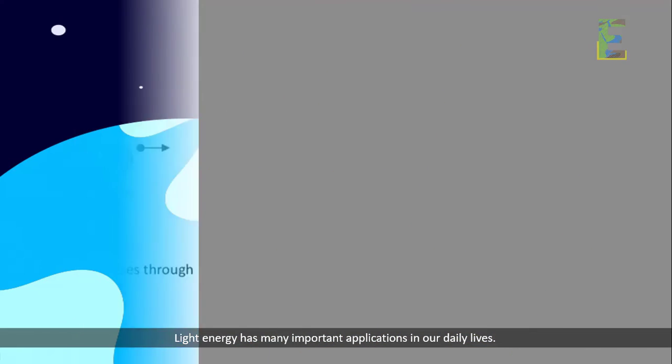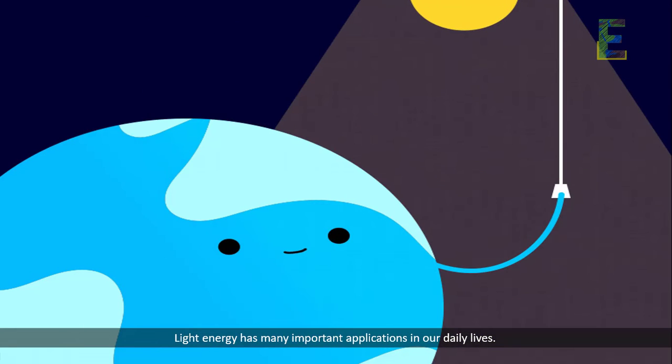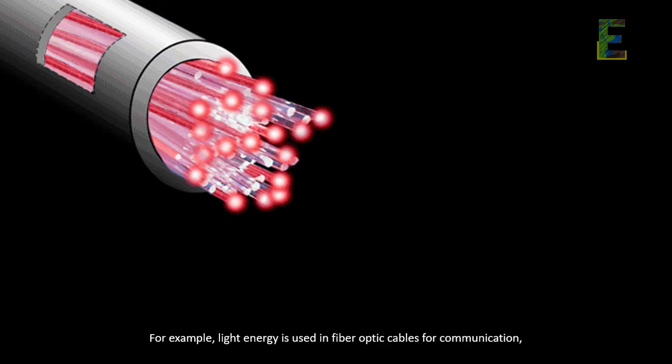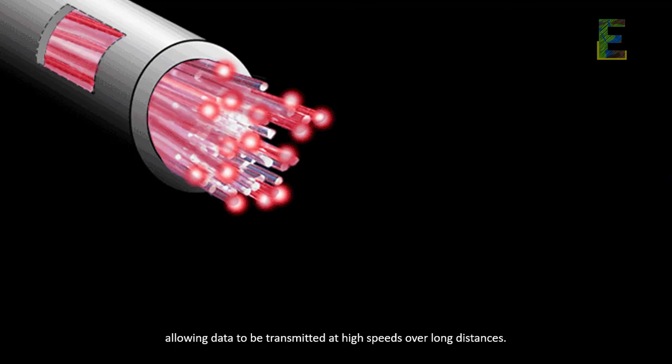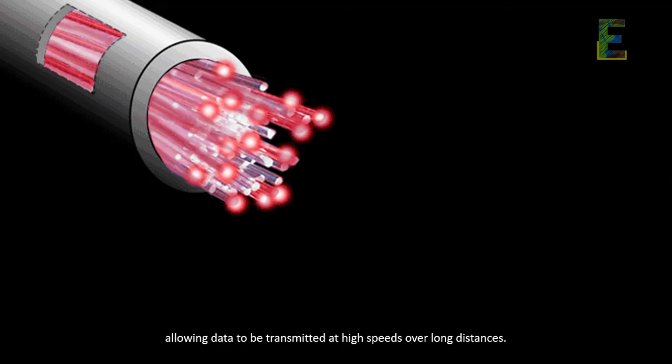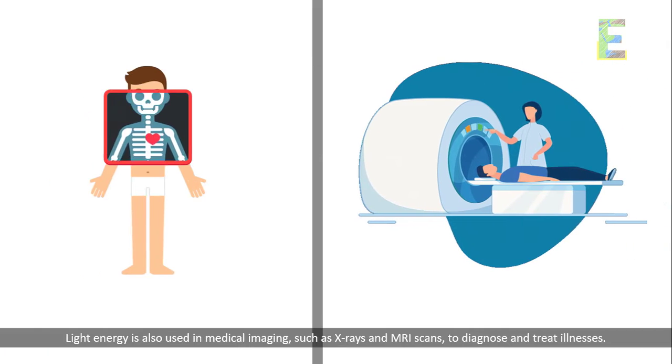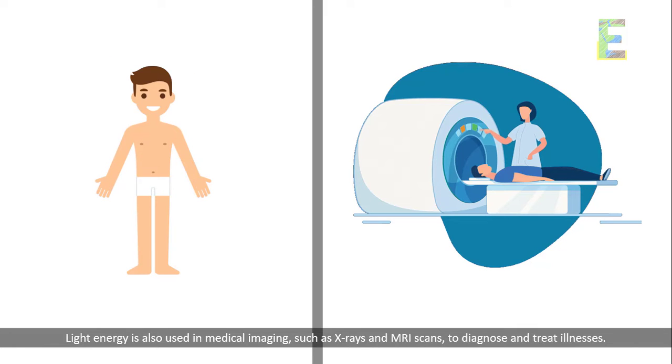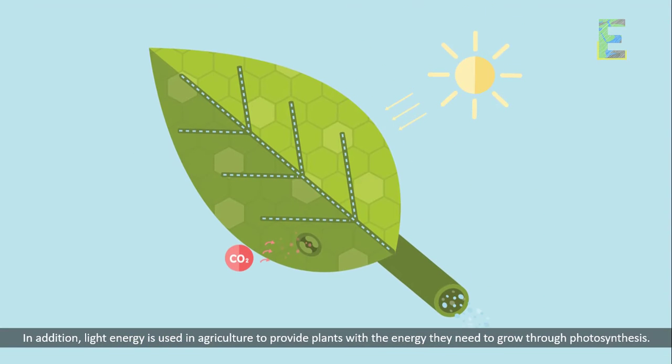Light energy has many important applications in our daily lives. For example, light energy is used in fiber-optic cables for communication, allowing data to be transmitted at high speeds over long distances. Light energy is also used in medical imaging, such as x-rays and MRI scans, to diagnose and treat illnesses. In addition, light energy is used in agriculture to provide plants with the energy they need to grow through photosynthesis.